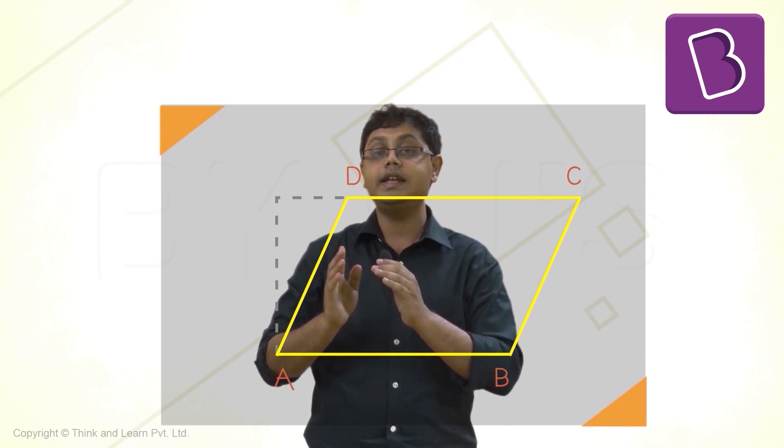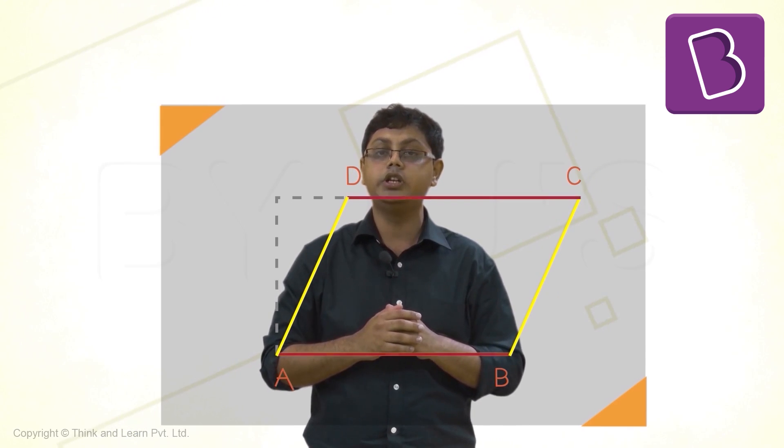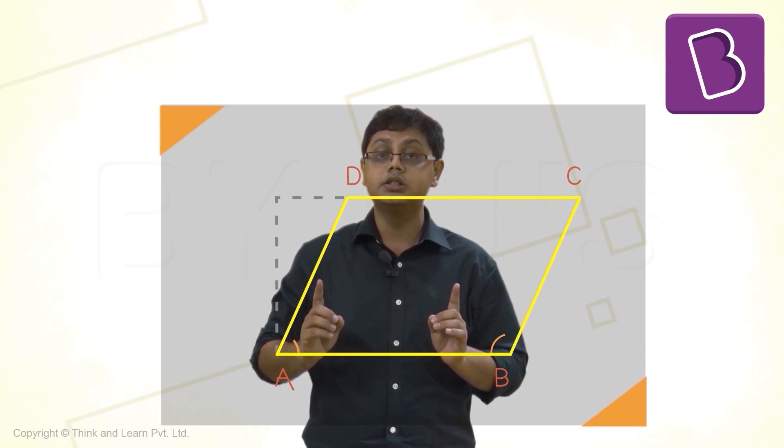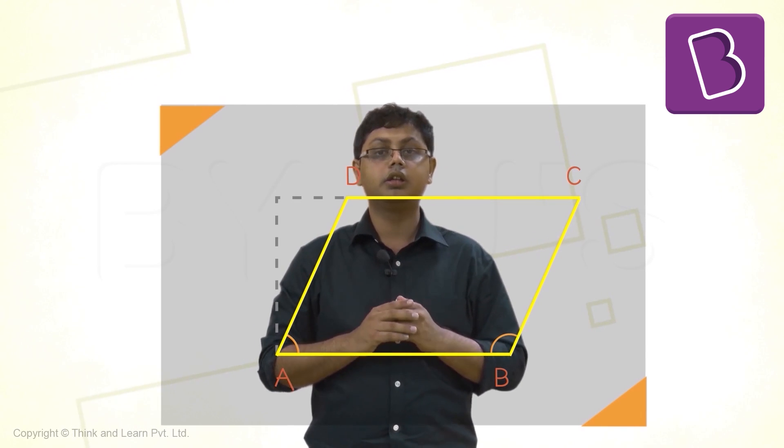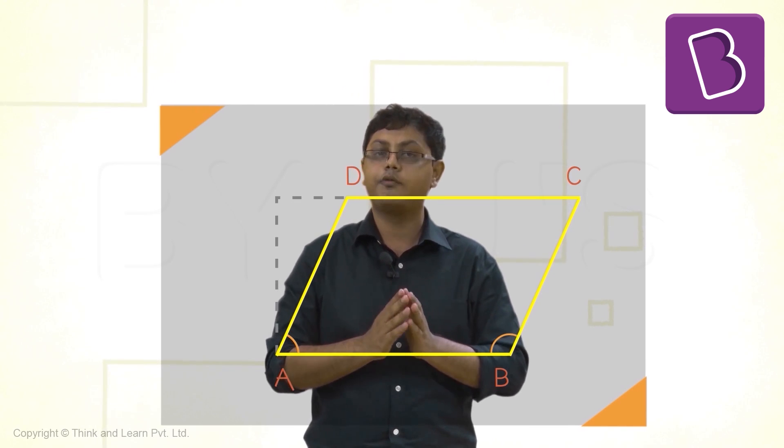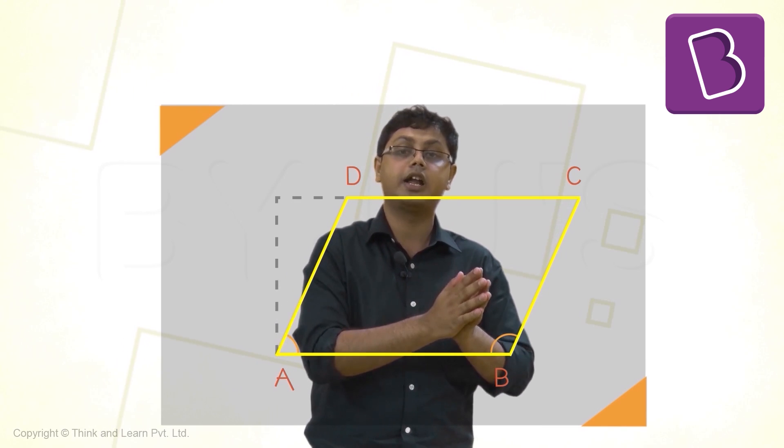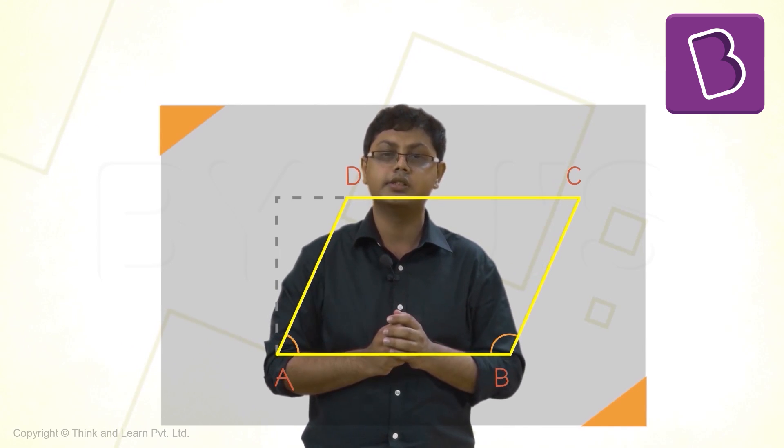Can you see what's happening? The lines AB and CD are still parallel and equal to each other, but the angles are no longer 90 degrees. This figure we just got is a parallelogram. In fact, all squares and rectangles are special parallelograms which have angles of 90 degrees.